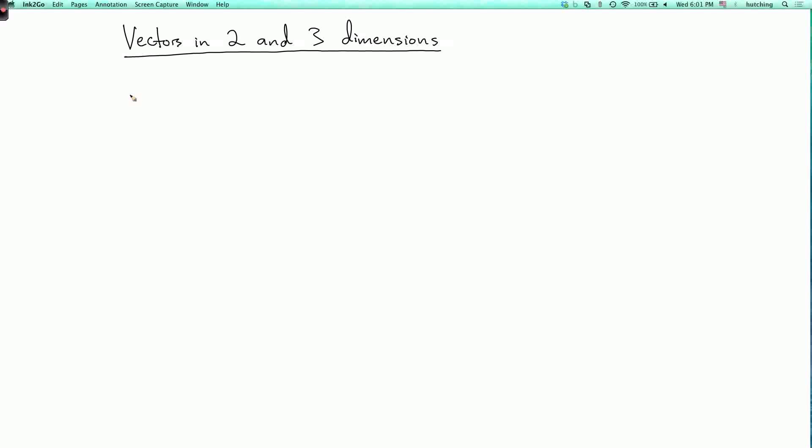We're now going to talk about vectors in two and three dimensions. Let's start with a two-dimensional case. So a two-dimensional vector is just a pair of real numbers. And I write it as A equals A1, A2.